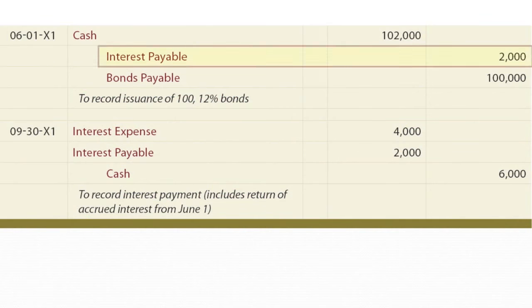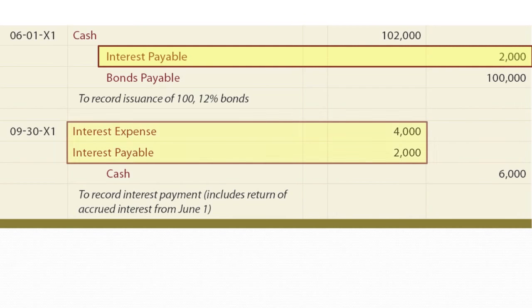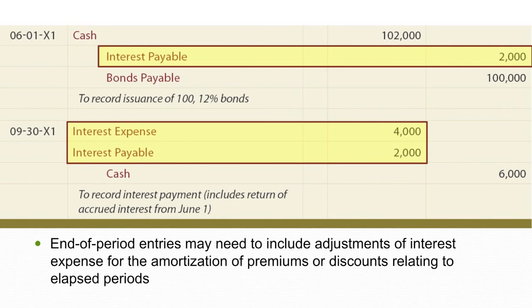Let's look at some journal entries. On the issue date, we debit cash $102,000 — that's the $100,000 issue price plus $2,000 of accrued interest. Then on September 30th, we credit cash $6,000, debiting $4,000 to interest expense and relieving interest payable of $2,000. Note also that end-of-period entries may need to include adjustments for amortization of premiums or discounts relating to elapsed periods of time.